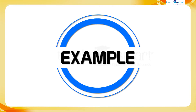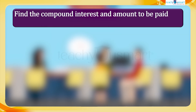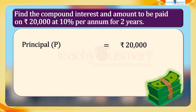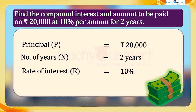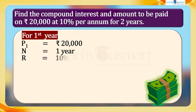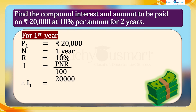Let's do another example. Find the compound interest and amount to be paid on 20,000 rupees at 10 percent per annum for two years. We have principle P = 20,000 rupees, N = 2 years, R = 10%. For the first year, P1 = 20,000 rupees, N = 1 year, R = 10%. Interest I1 = P × N × R ÷ 100 = 20,000 × 1 × 10 ÷ 100 = 2,000 rupees.